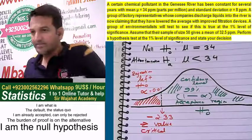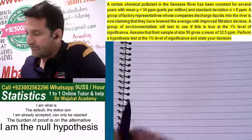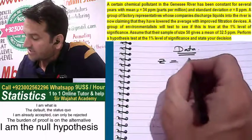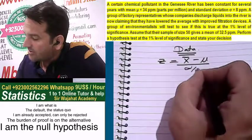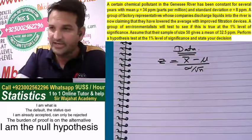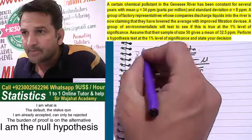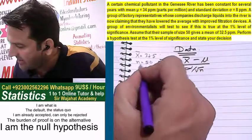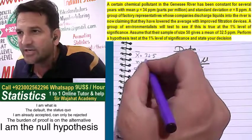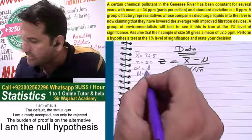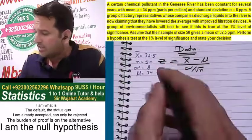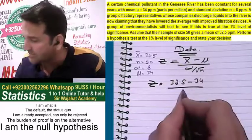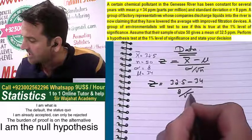Now we will write down the data and perform the test. We need to perform the Z test, where Z = (X̄ - μ) / (σ / √n). The data we have: sample mean X̄ = 32.5, n = 50, standard deviation σ = 8, and μ = 34. Substituting: Z = (32.5 - 34) / (8 / √50).